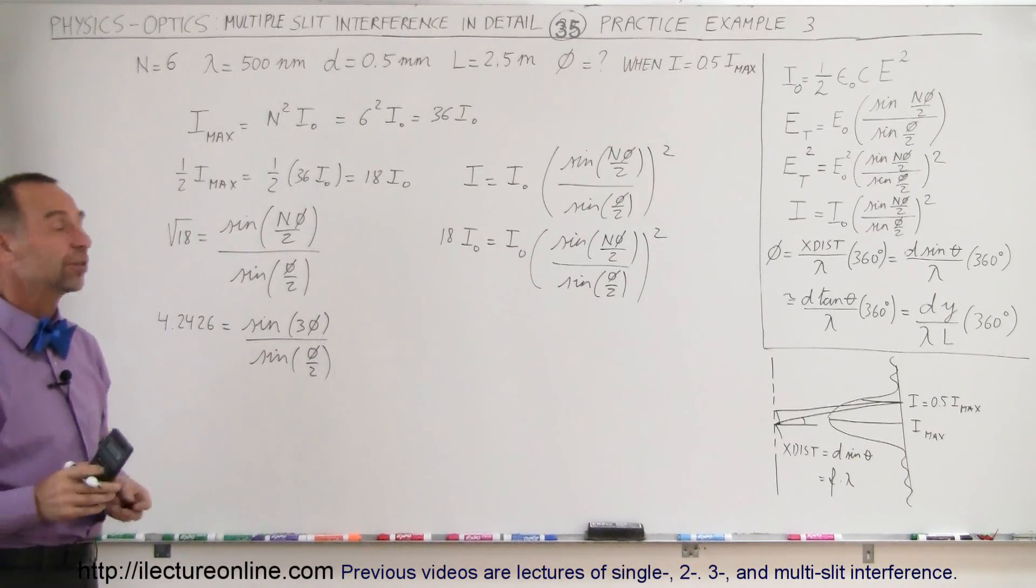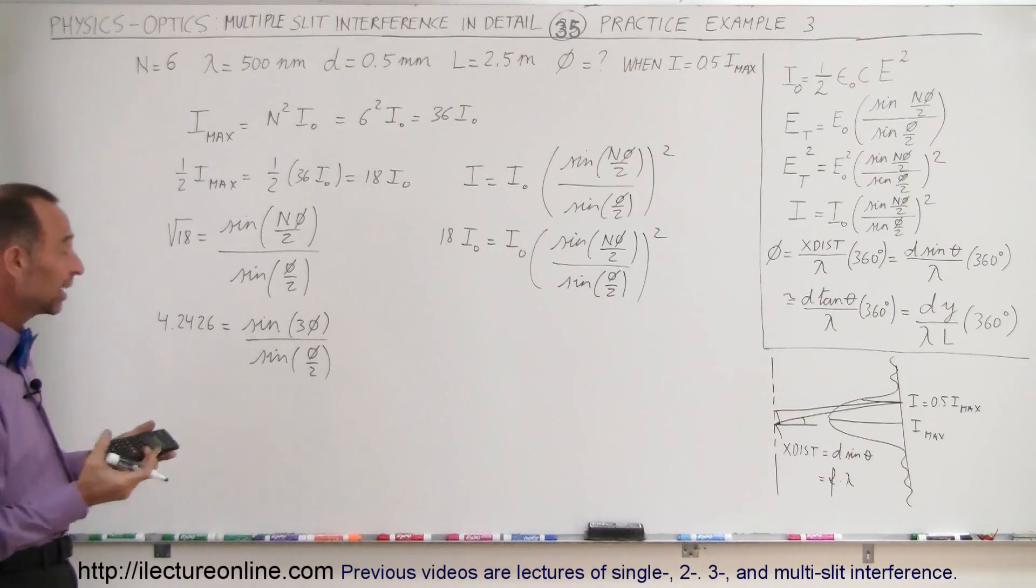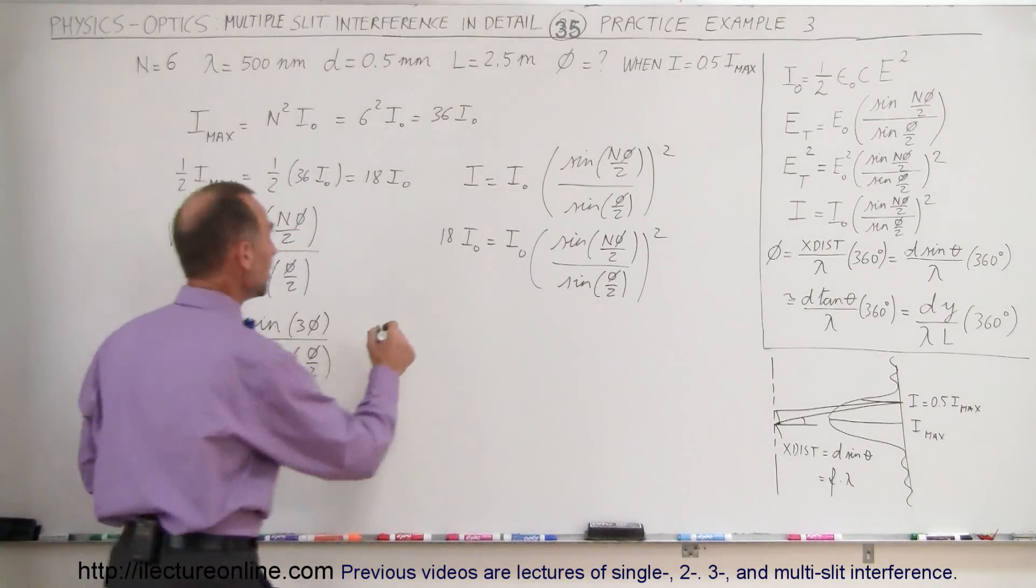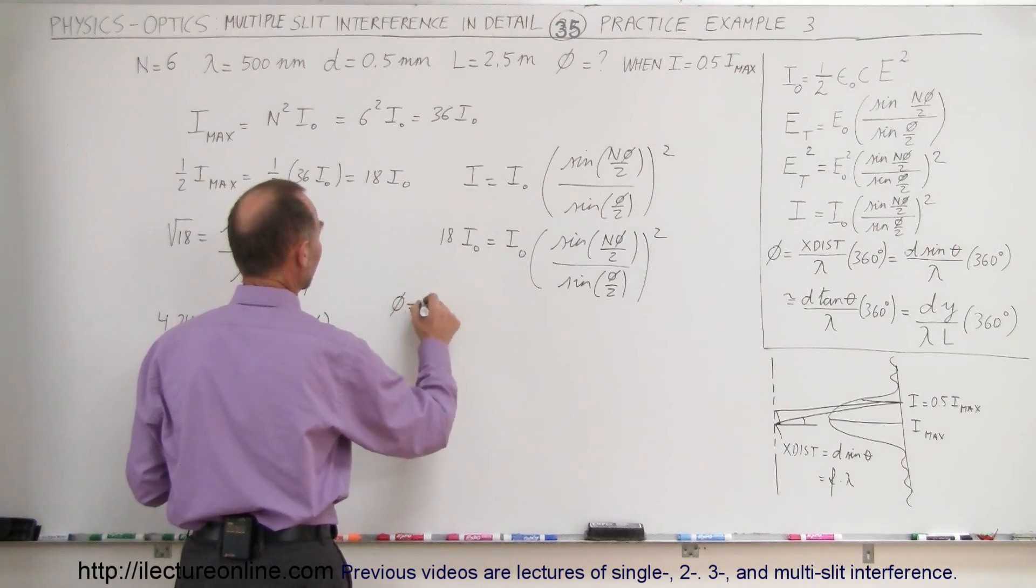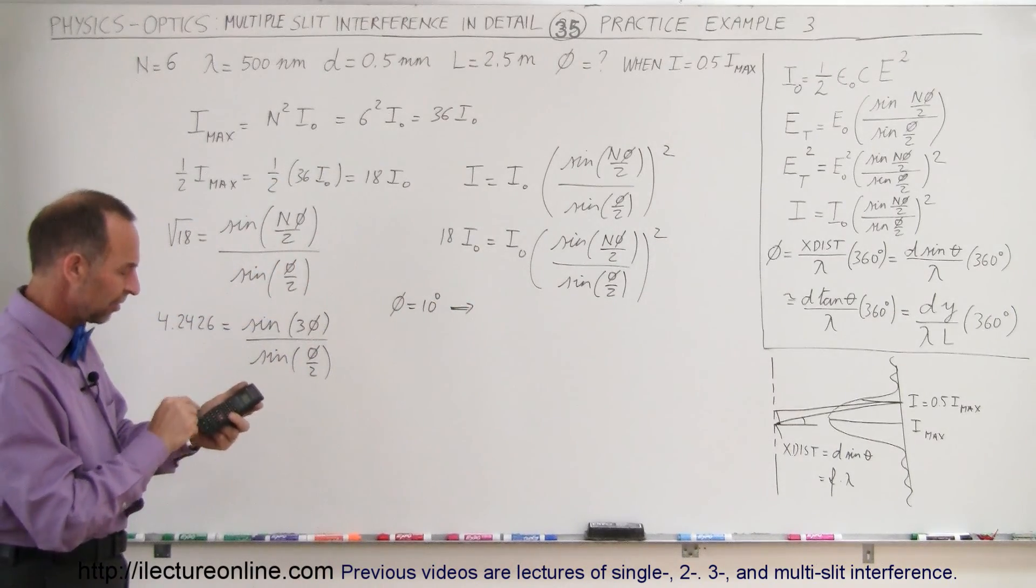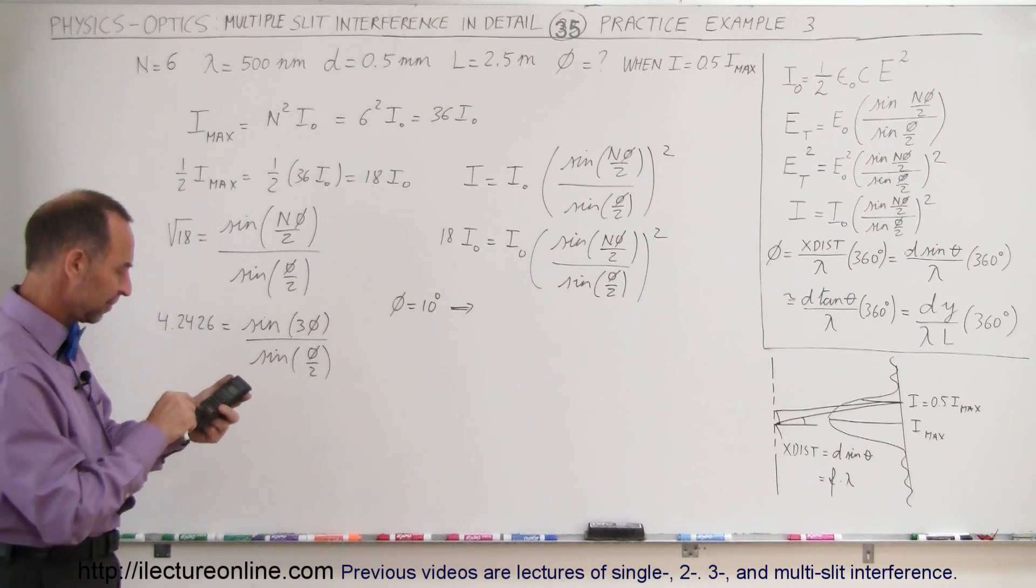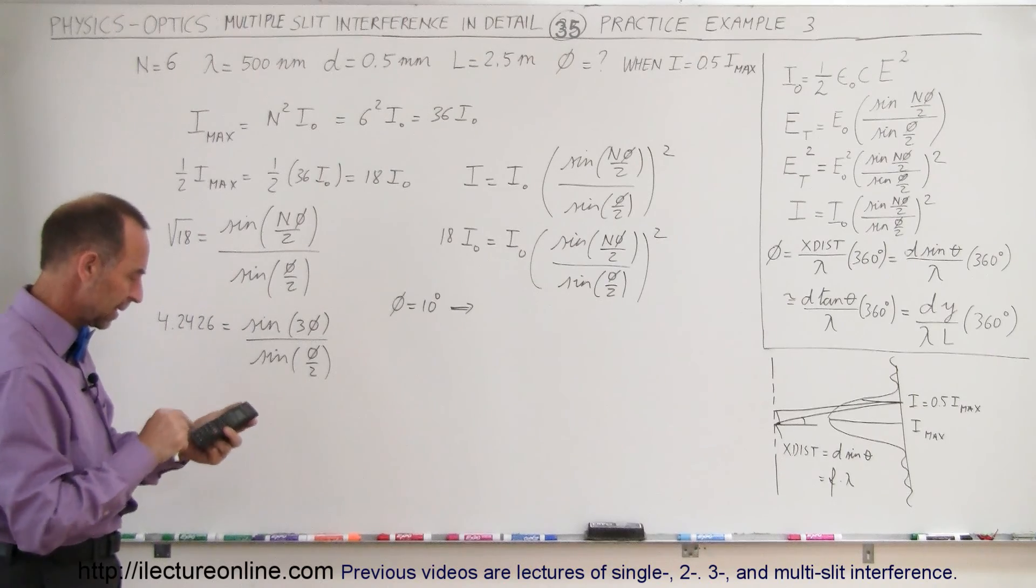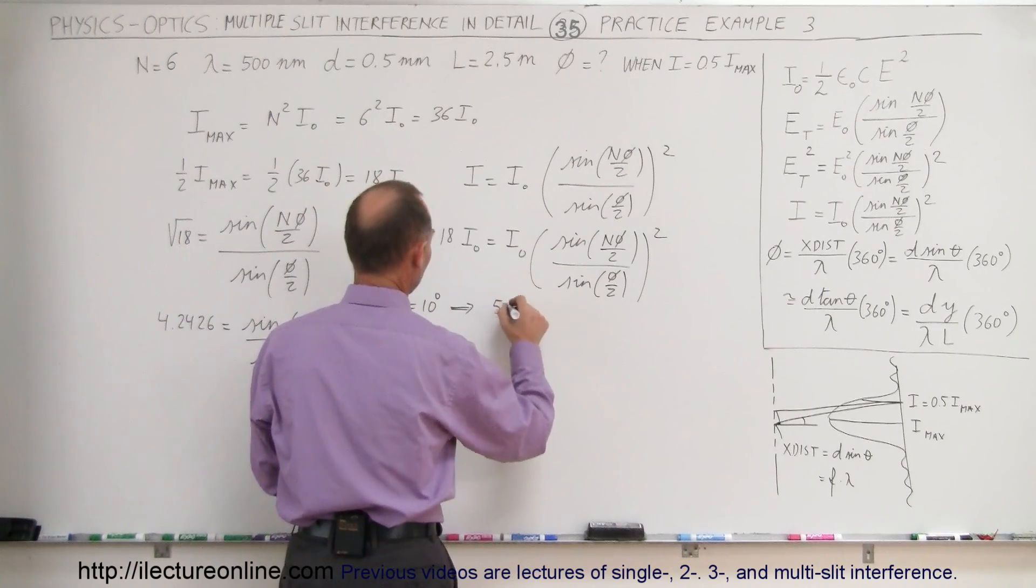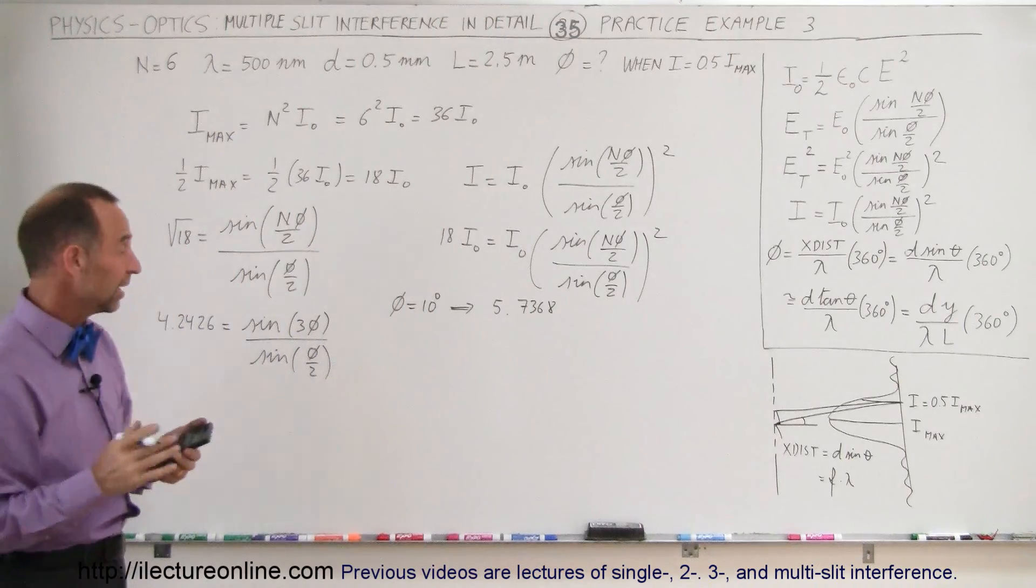There's no direct method to do that, but we can do an iterative method, we can kind of zoom down to it since we have calculators. Let's try phi equals 10 degrees. If phi equals 10 degrees, we take sine of 30 divided by sine of 5, and we get 5.7368 for that ratio, which isn't quite enough.